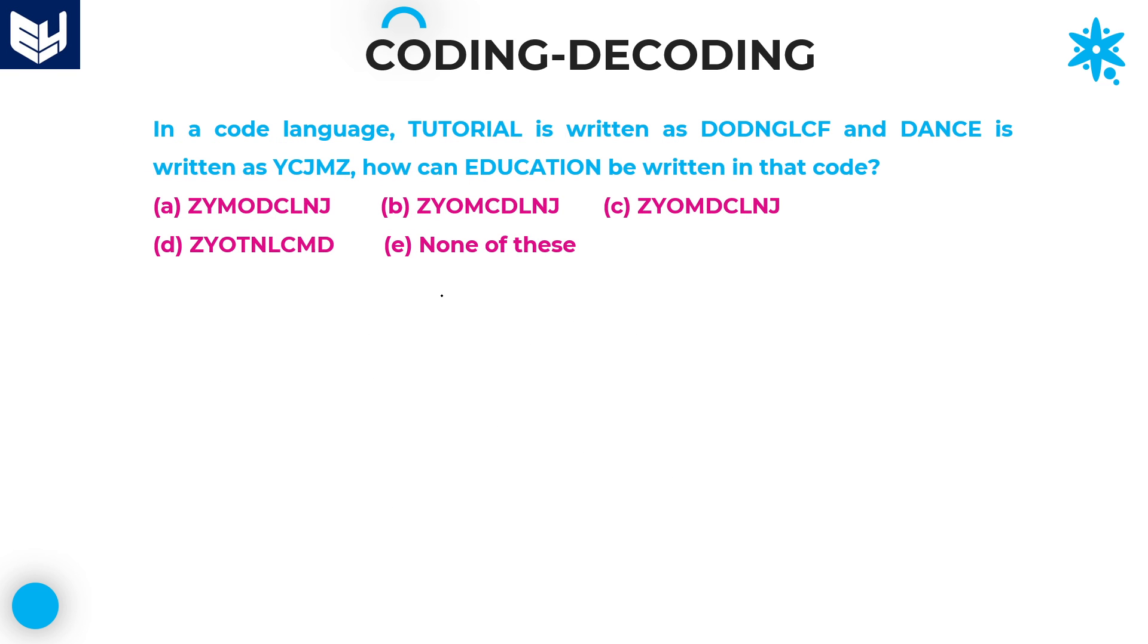Let's move on to the next question. Here, first one is given as TUTORIAL is written as this particular code, and DANCE is written with particular code. Now the question is asking about EDUCATION. First, write down all the different letters which are there in that. T-U-O-R-I-A-L, and next after that, DANCE. D is not completed, A is completed, N is not completed, C is not completed, and E.